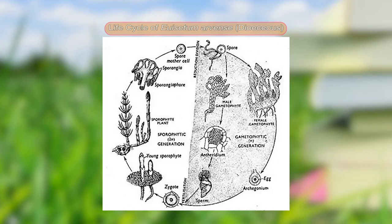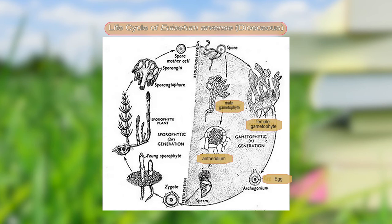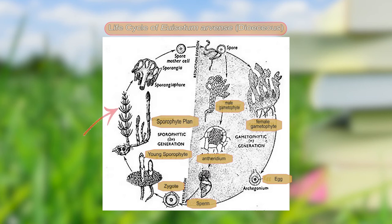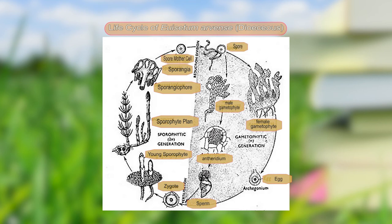Here we end with the total life cycle of Equisetum. We started with the vegetative part. The male gametophyte and female gametophyte produce the antheridium and egg. The antheridium forms the antherozoids or sperm. After fertilization, the zygote forms, which slowly develops into a young sporophyte. The sporophyte grows with proper branching, and the vegetative branches are terminated into a strobilus. The strobilus has sporangiophores and sporangia, the sporangia contain spore mother cells, and ultimately spores with elaters are formed to continue the life cycle.